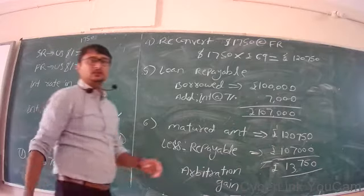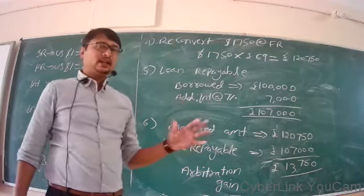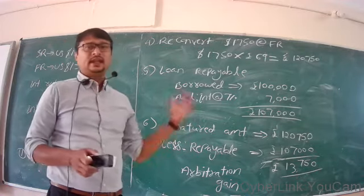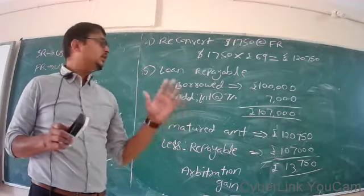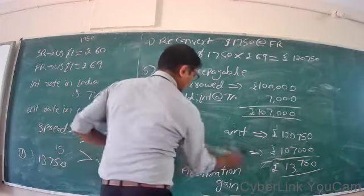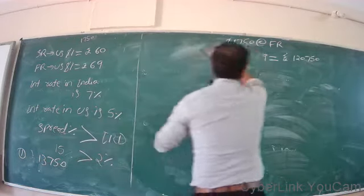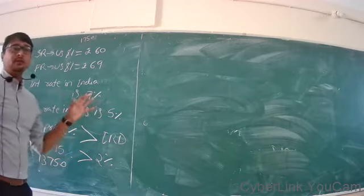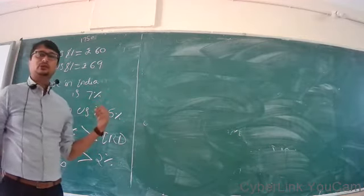You earned Rs. 13,750 from the arbitration process — that means you borrowed at a higher rate in India (7%) and deposited at a lower rate in the US (5%). By borrowing Rs. 1,00,000 you earned Rs. 13,750, which is almost 13% return. Now, a US person sees this — interest rate in US is 5% and deposit rate in India is 7% — and thinks of borrowing at 5% and depositing at 7%.